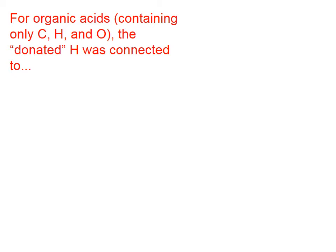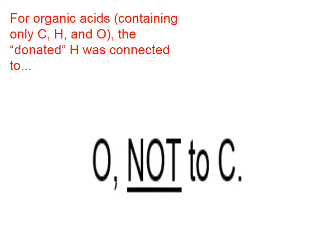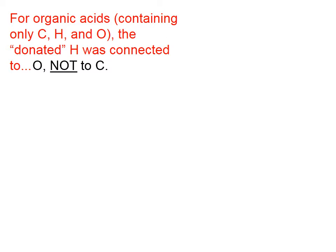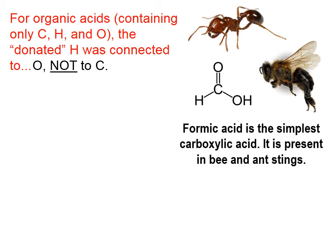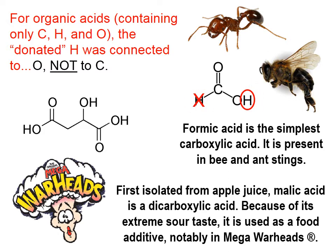For organic acids that contain only carbon, hydrogen, and oxygen, any donated hydrogen was connected to an oxygen, not to a carbon. For example, formic acid has two H's in its formula, but only the one connected to oxygen is possibly going to be donated. And because this is a weak acid, not even 100% of those H's are going to be donated. When formic acid donates a proton, it's the one connected to oxygen on the right, not the one connected to carbon on the left.